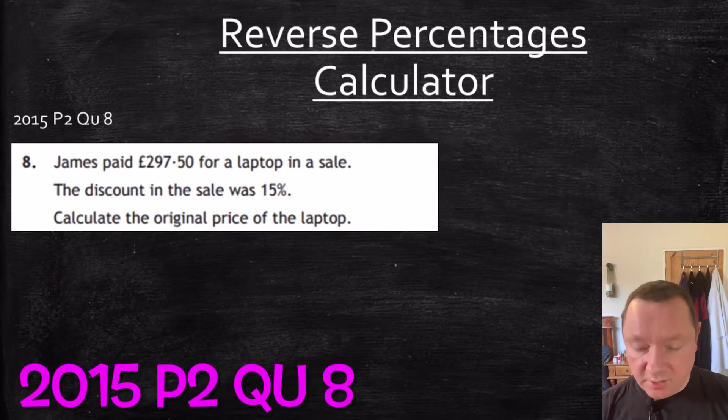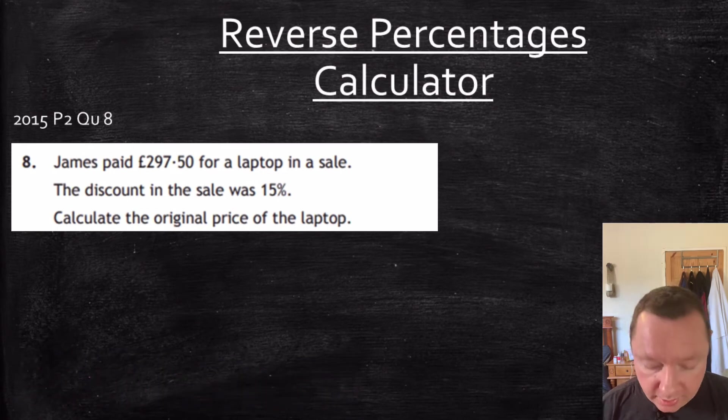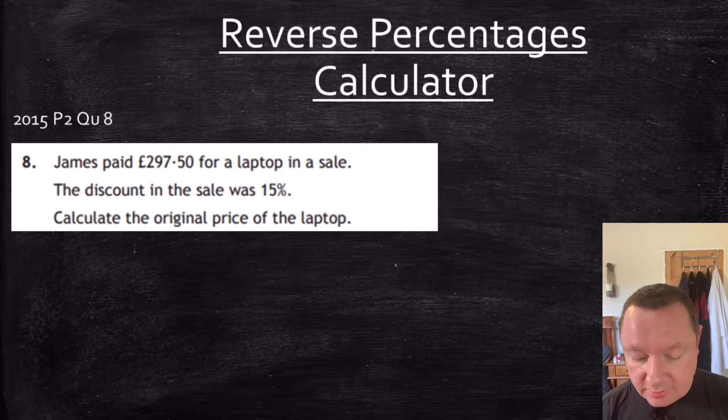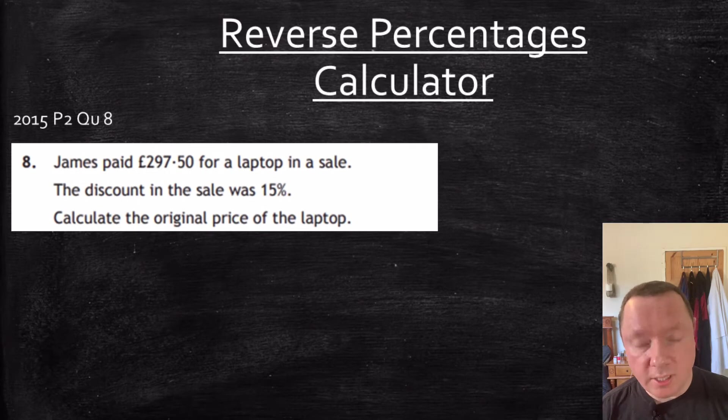Okay, reverse percentage, but this time we'll have a calculator. Still 2015, Paper 2, Question 8. It says, James paid £297.50 for a laptop in a sale. The discount in the sale was 15%. Calculate the original price of the laptop. Here's a tip. There's no time in this question, so it's probably reverse percentages.